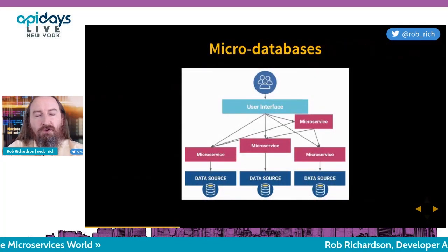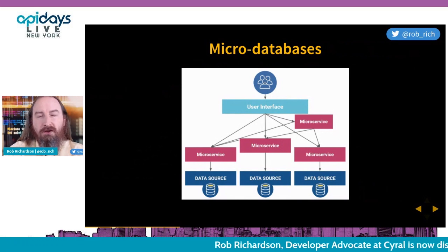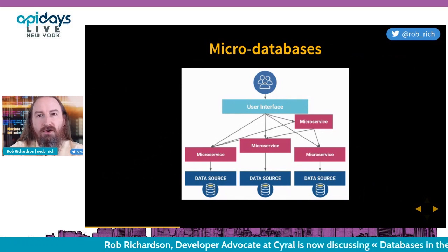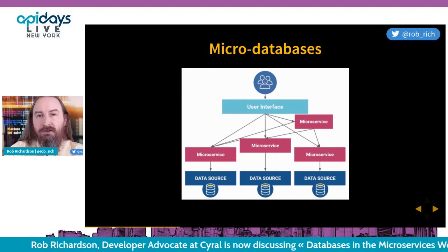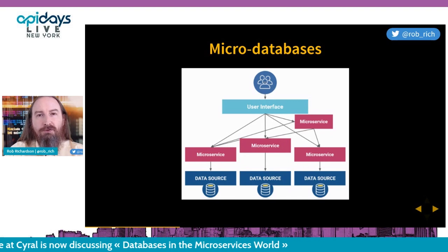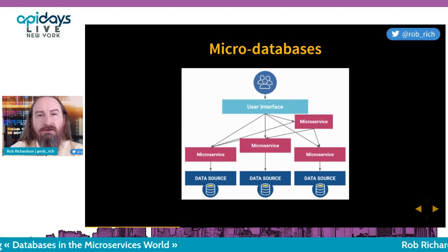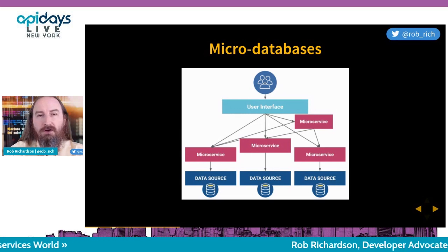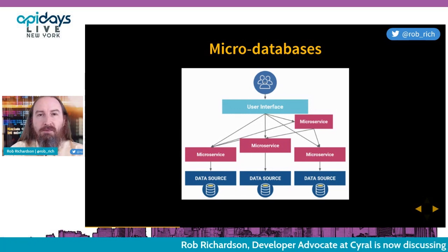Now that we've gotten to micro databases, we know each microservice owns its own data. We don't need to wander the office asking 'are you using this column? Can we remove it? Can we split it?' A microservice owns its own data, and that micro database is exclusively owned by that service. If the service no longer needs it, the micro database is obsolete and can be removed.